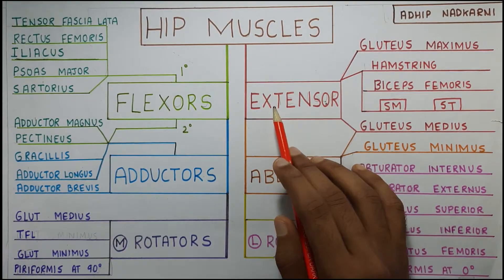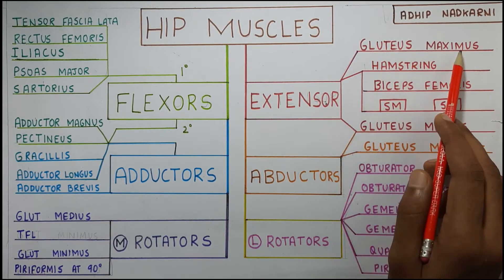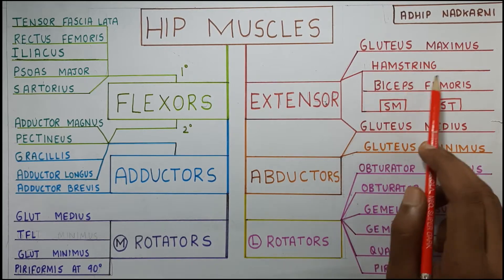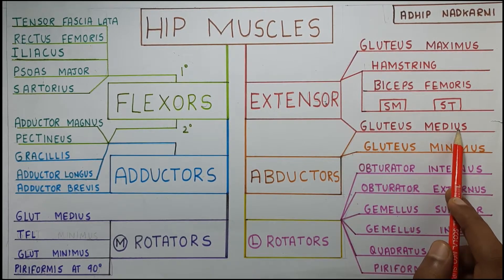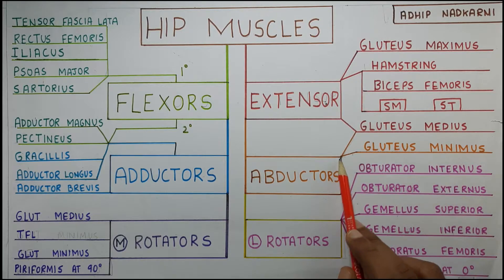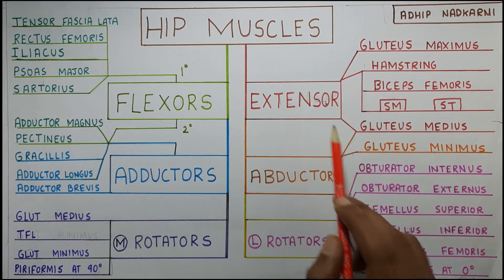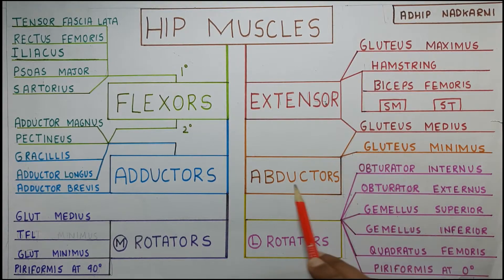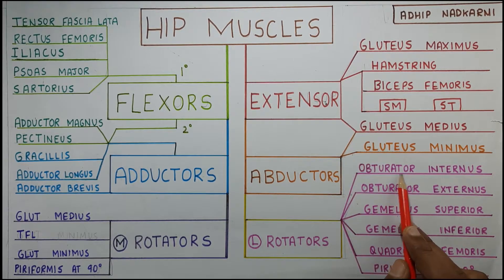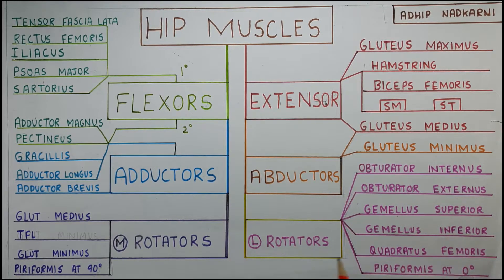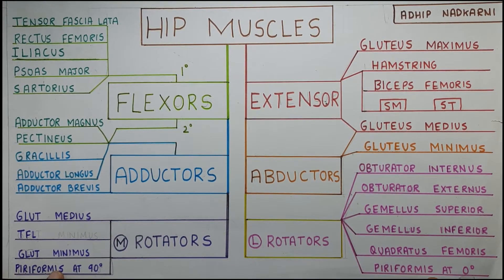The extensors are Gluteus Maximus, which we all know, then Hamstrings — also very familiar — and Gluteus Medius. Abductors are Gluteus Medius again, which is both a common abductor and an extensor, and Gluteus Minimus. For lateral rotators there is Obturator — with Obturator Internus and Externus — then Gemellus with Superior and Inferior, and Quadratus Femoris. Piriformis sits on both the medial and lateral rotator side because it performs both functions depending upon the position of the hip joint.